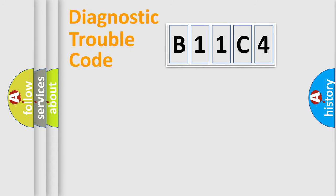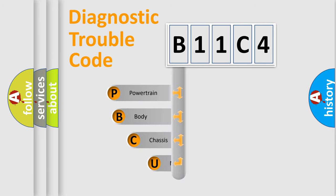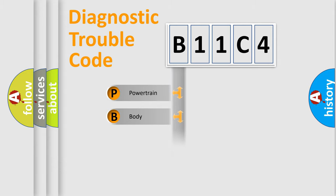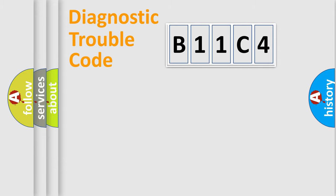Let's look at the history of diagnostic fault code composition according to the OBD-II protocol, which is unified for all automakers since 2000. We divide the electric system of an automobile into four basic units: Powertrain, Body, Chassis, and Network.